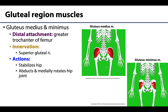The gluteus medius and minimus will be deep to the gluteus maximus, except for the top portion of the gluteus medius. As their names suggest, they are indicative of their size: the medius is intermediate in size compared to the maximus and minimus, and the minimus is the smallest. They have a similar shape, though the minimus won't extend as superiorly. Both will have their distal attachment on the greater trochanter of the femur, which is one of the major reasons the greater trochanter is so large, as these are very powerful muscles.